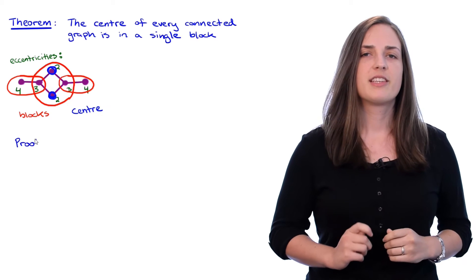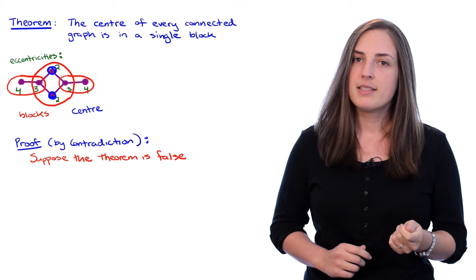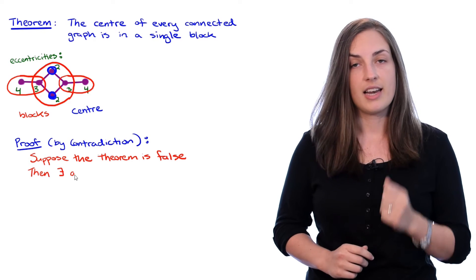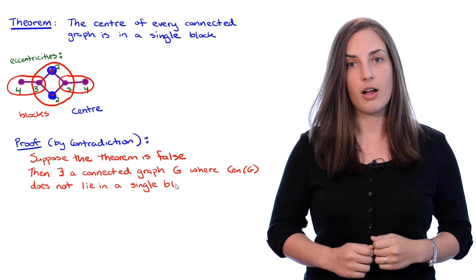Now what we want to do though is see how we could prove this theorem in general. We will prove this theorem by contradiction. So we start by supposing that the theorem is false. What this means is that then there exists a connected graph G whose center does not lie within a single block.